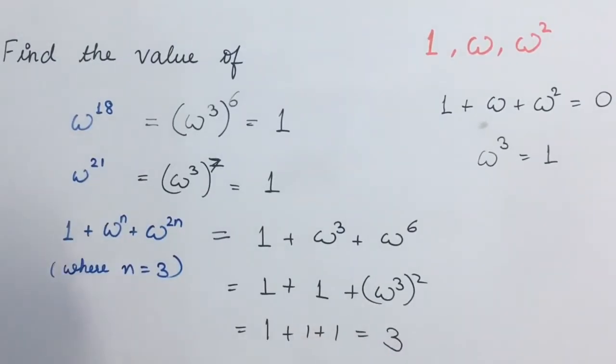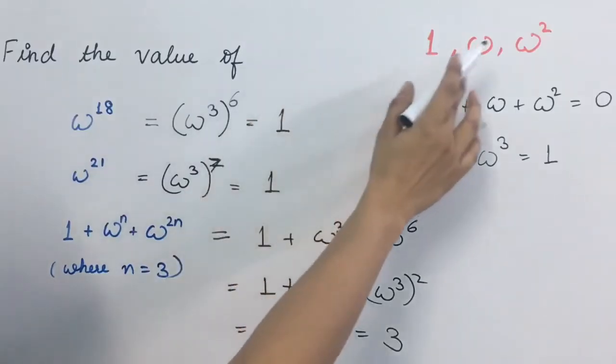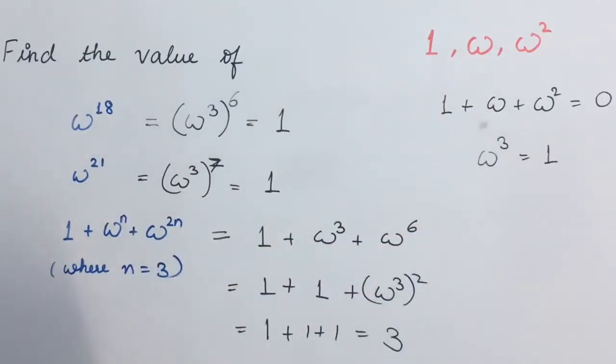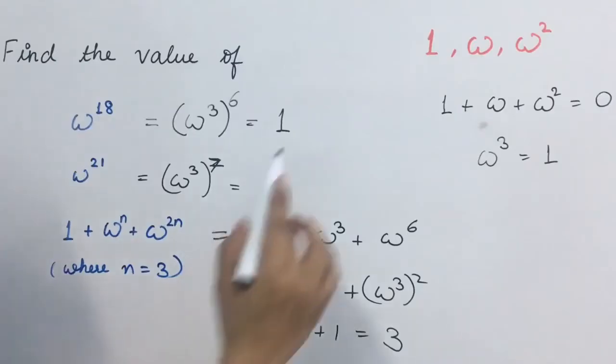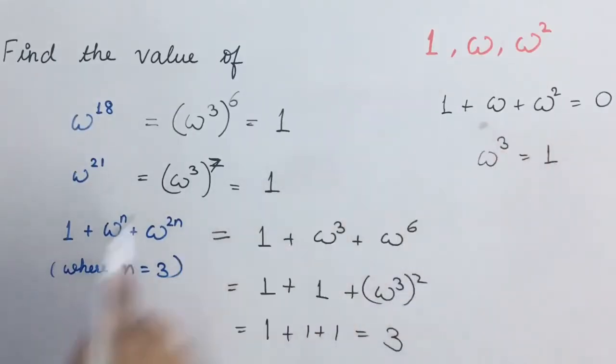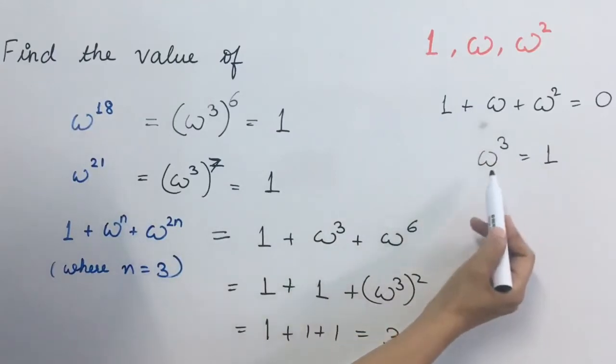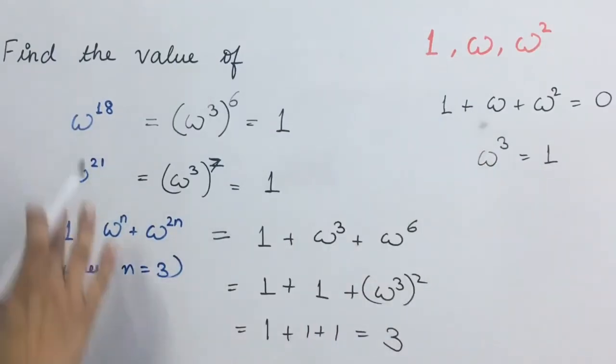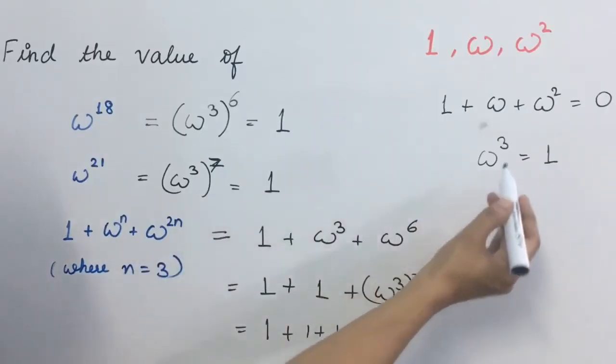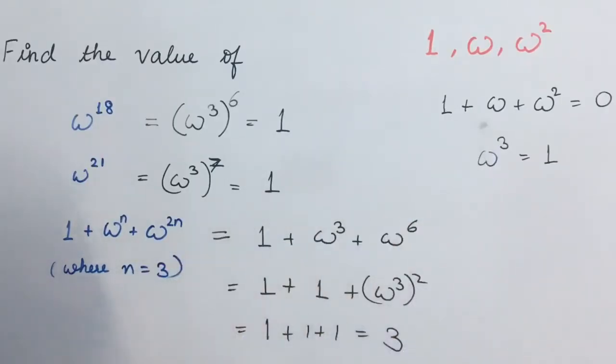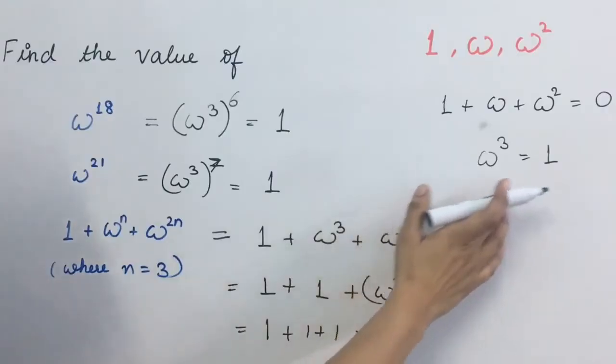So in short, what we can say that 1, omega, omega square, these are the cube roots of unity such that in 3 ka jo sum hoga, that will be equal to 0 and in 3 ka jo product hoga, that will be equal to 1. And from these examples, we can interpret that omega raised to power 3n, that is a multiple of 3, will always be equal to 1.